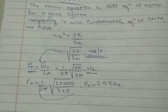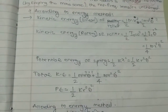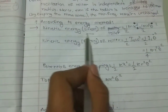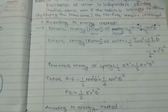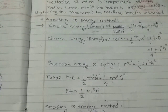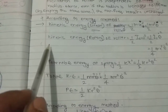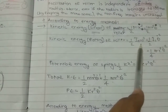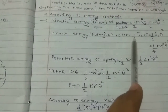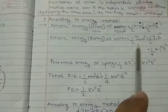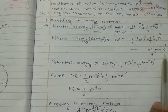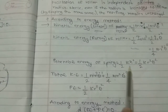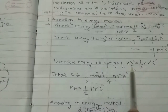Now we solve it using another method, the energy method. First we find the kinetic energy and potential energy of the system. The linear kinetic energy of the roller equals (1/2)*m*x-dot², where x-dot equals r*theta-dot. The rotary kinetic energy of the roller is (1/2)*I₀*omega², where omega equals theta-dot and I₀ equals (1/2)*m*r², giving (1/4)*m*r²*theta-dot². The potential energy of the spring is (1/2)*k*x² equals (1/2)*k*r²*theta², substituting x² as r²*theta².